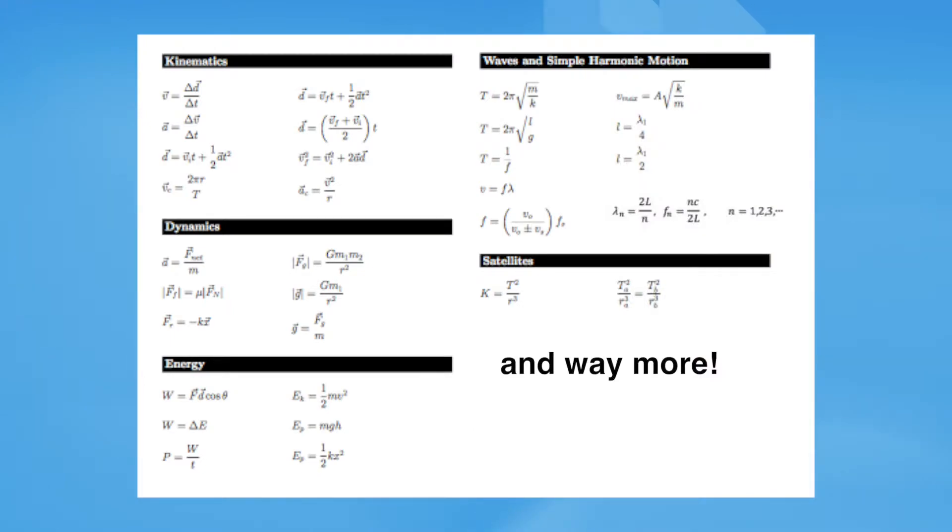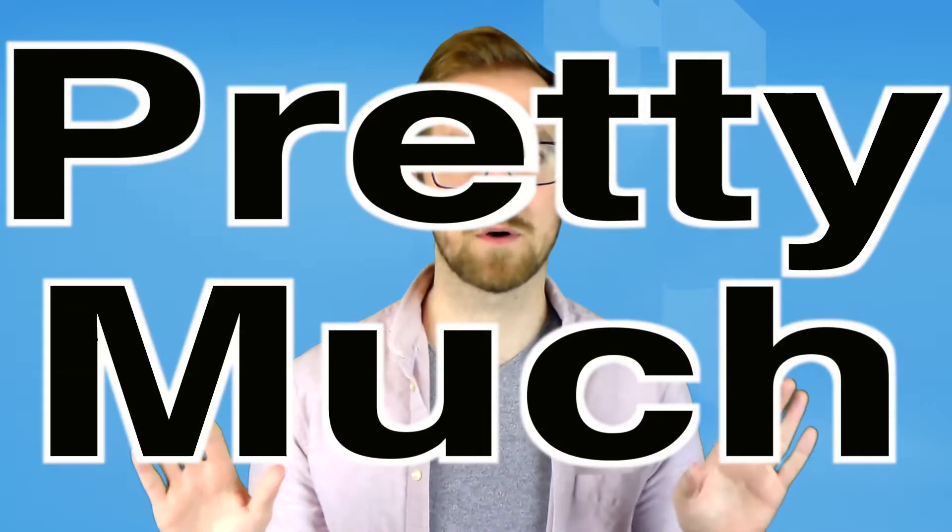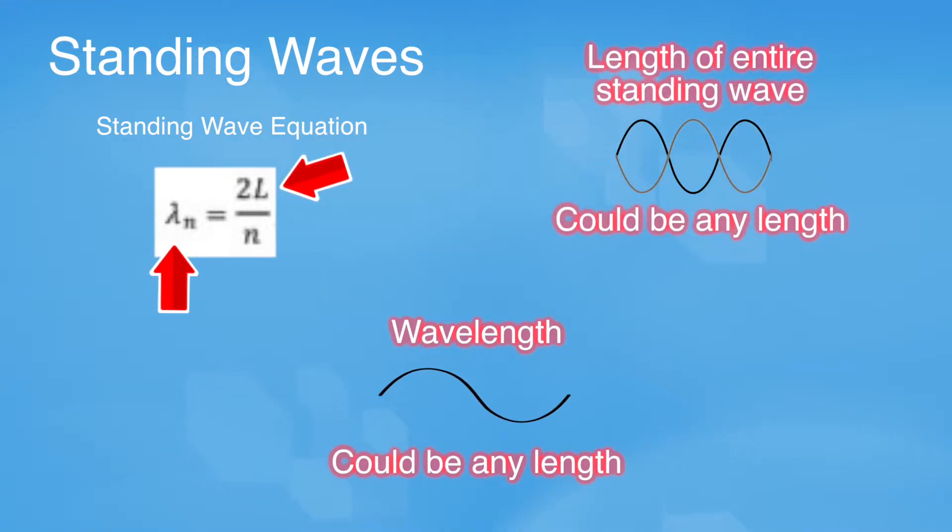All of the letters in these equations either had to be one number, or it could be any number. All variables for physics equations at the time were like this, across the board, except for the equation of a standing wave. The equation has three variables. Wavelength, which could be any length in the right situation. L, which is the length of the whole standing wave, same thing, could be any number.